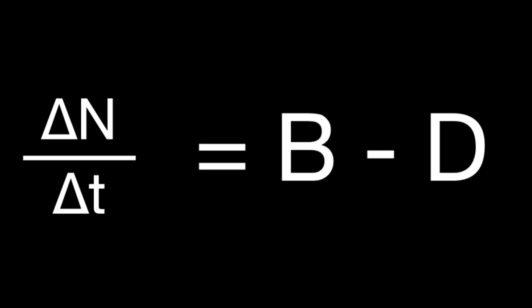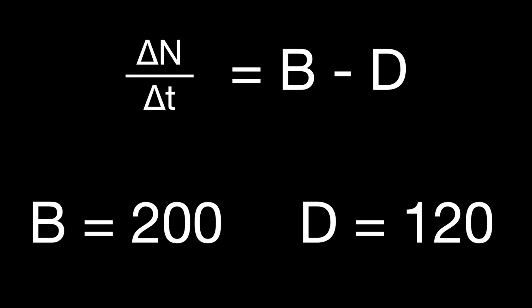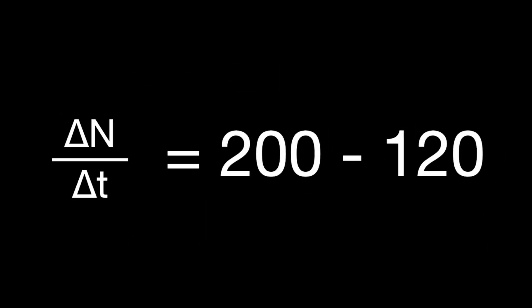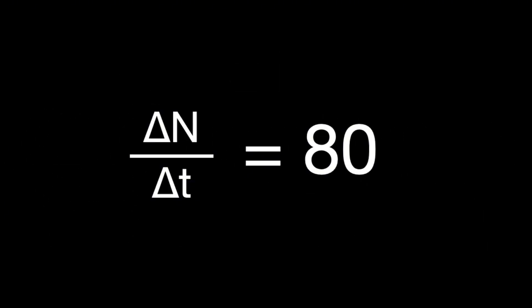Now B minus D could be both positive or negative, indicating an increase or decrease in population size. For instance, if 200 new individuals were born while 120 individuals died, then the difference of positive 80 would mean the population grows by 80 individuals. The problem with this model, though, is that there's no consideration of the current size of the population — so while we know the growth in raw numbers, we don't know what that change is being applied to.